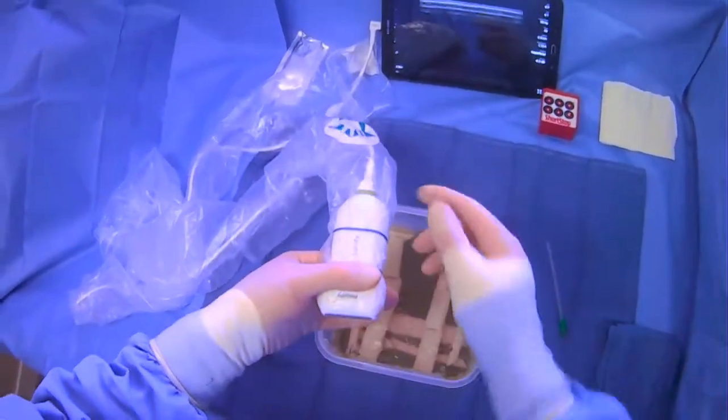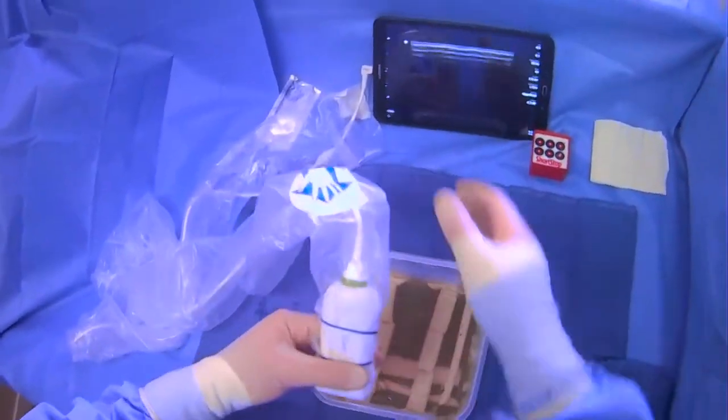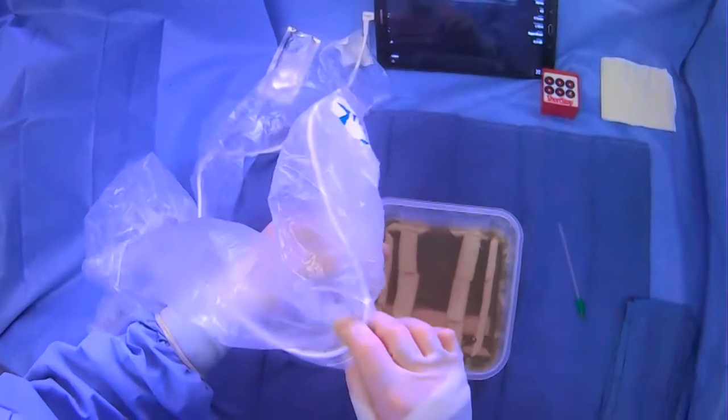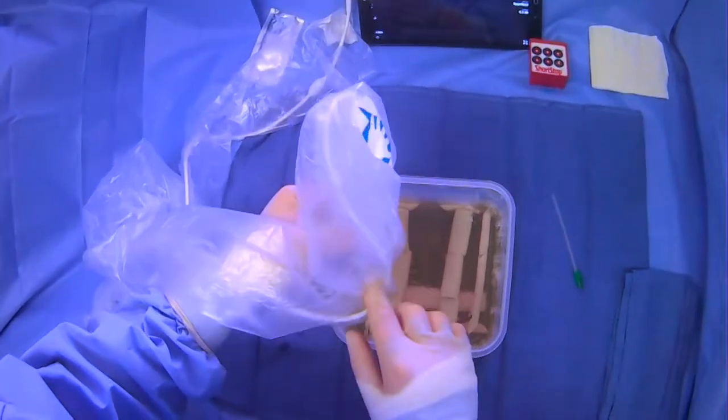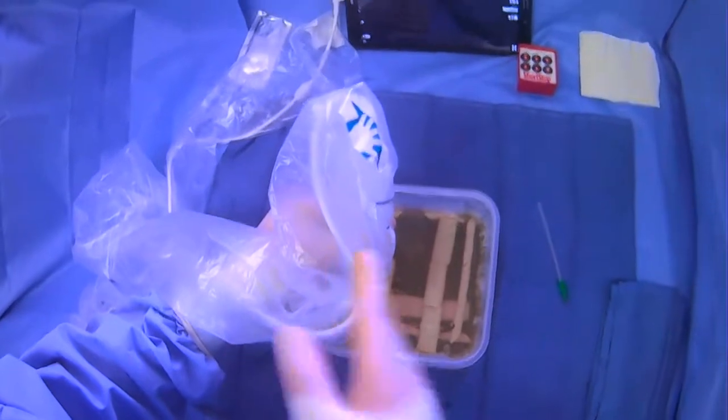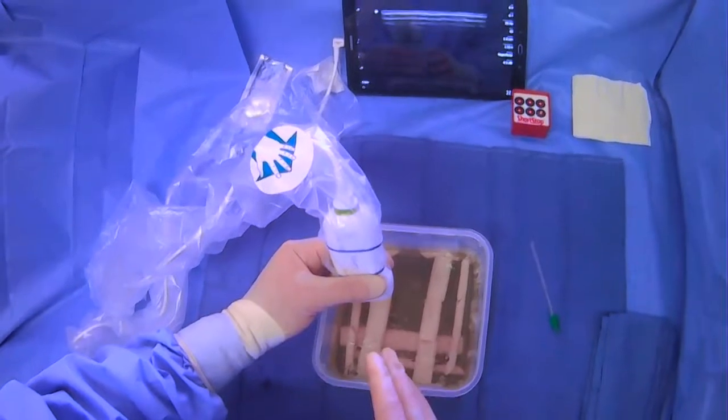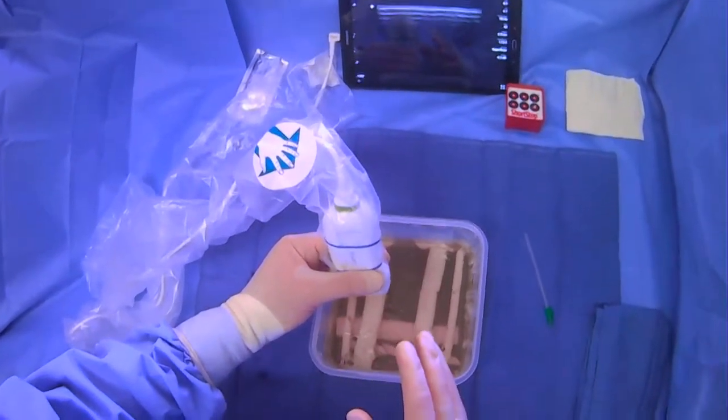The other is the cord. So the cord should never be in where you're working. If you're trying to gain access from this direction, you have to make sure that the cord is out of your procedural field. So that's very important.